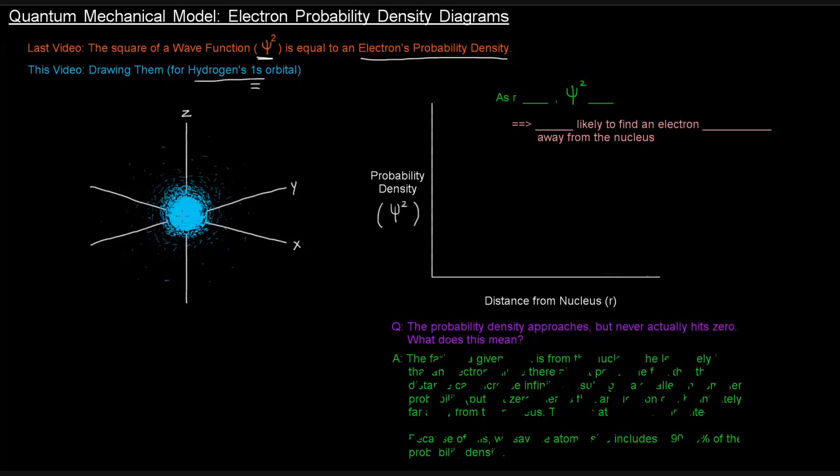And this here, what's drawn, is the probability density, the electron's probability density. So if we think about the origin, the intersection point of the x, y, and z-axes as the center and specifically as the nucleus, then everything in blue here is showing you the likelihood that an electron would be around that nucleus. You can see that where the blue is really dense is near the nucleus or near the center. So as you move away, these dots that represent the probability become less and less frequent, less densely packed.